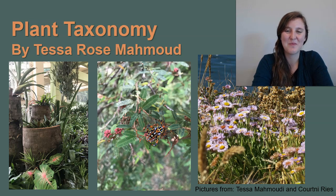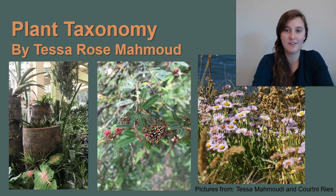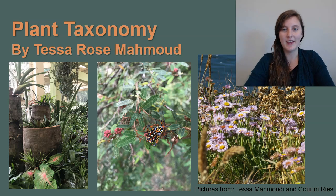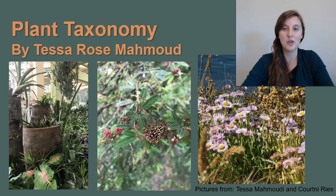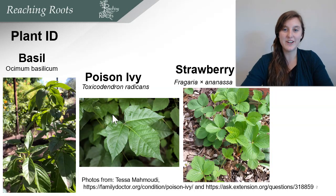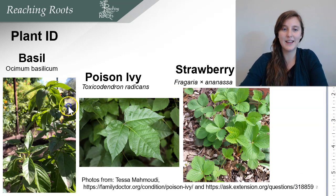Hi, my name is Mrs. Tessrose Mahmoudi and today we're going to talk about plant taxonomy. There's a lot of plants out there which can get really overwhelming when you're trying to identify different plants, but if you understand the basics of the hierarchy system that plant scientists use to name plants, you'll be better equipped for identifying the plant family, genus, and species. When you're identifying a plant, it's helpful to look at characteristic features such as the leaf shape. Let's go over an example of basil, poison ivy, and strawberries.